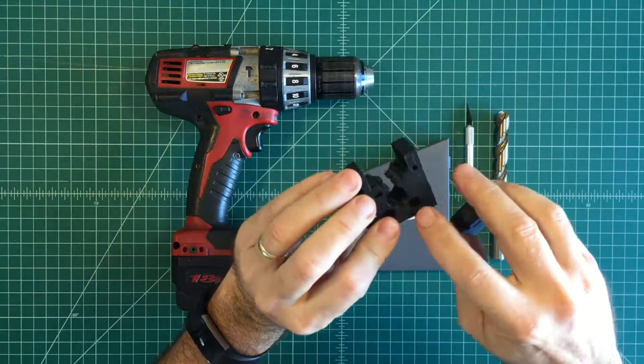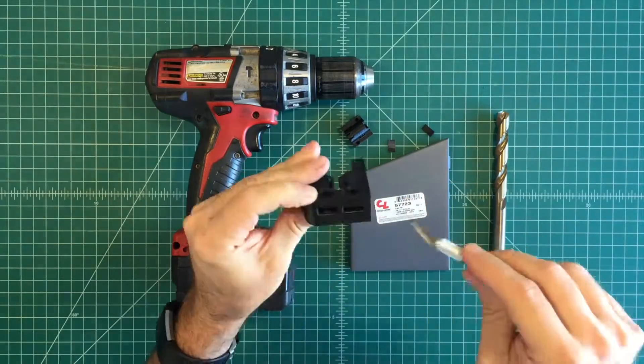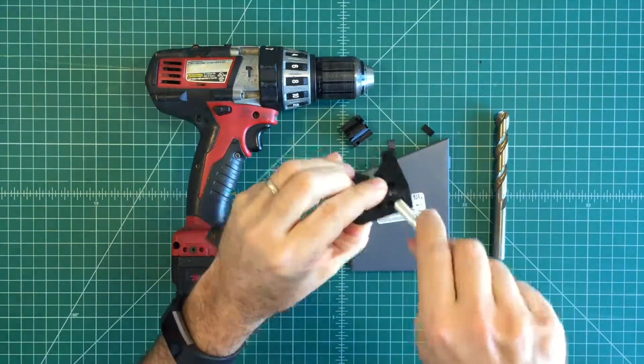The first step is to clean out the support structures that are in the Micro Extruder Body and Idler. We recommend using an X-Acto knife for this process.